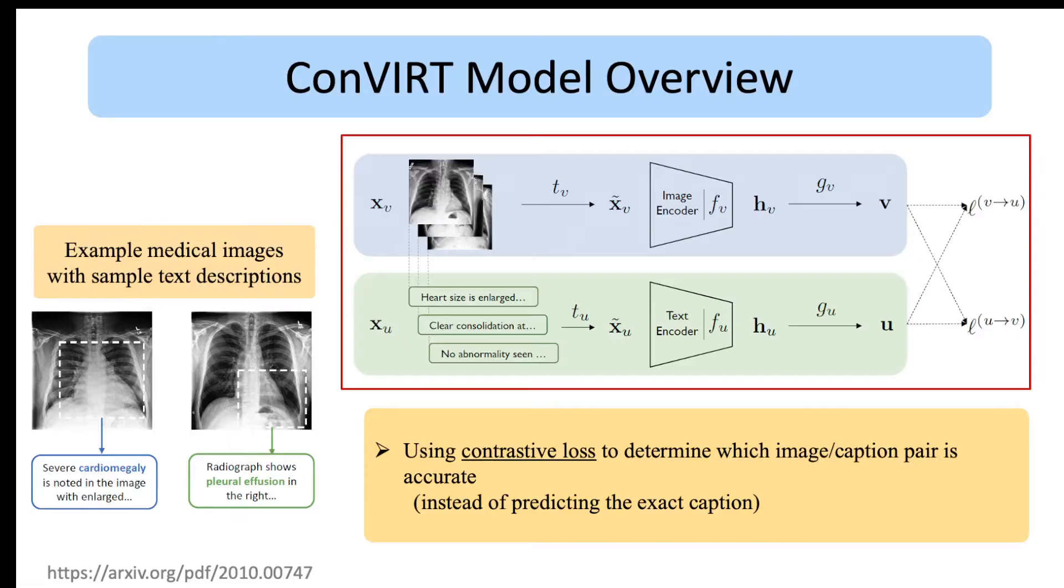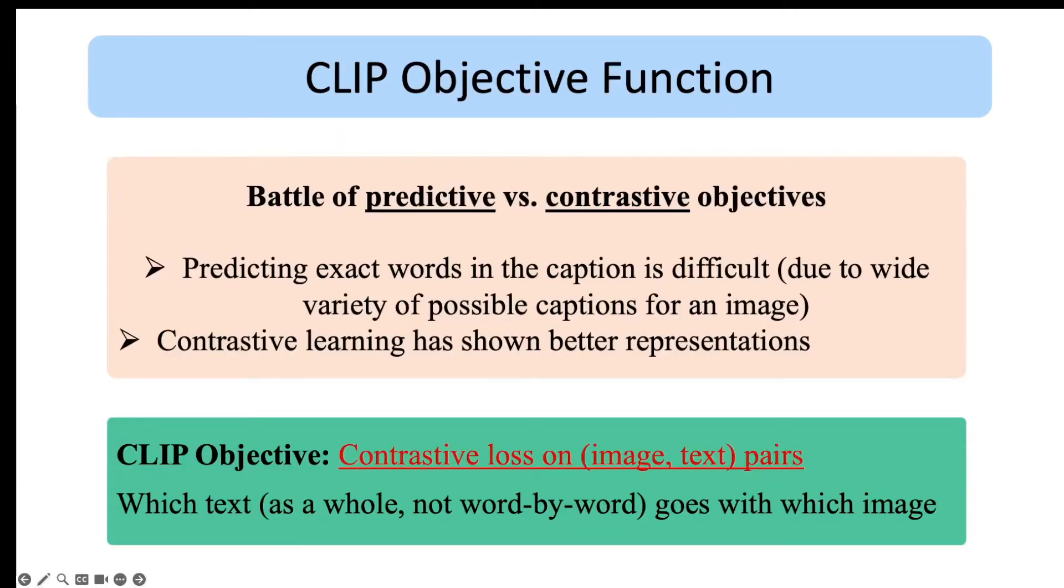In contrast to VirTex, for training this model they use contrastive loss that tries to increase the cosine similarity of representations of images and texts from the correct pairs. ConVIRT uses contrastive loss to maximize the similarity of corresponding representations. VirTex tries to predict the exact caption while ConVIRT uses contrastive loss. As we said earlier, predicting the exact caption is difficult, therefore CLIP follows the approach of ConVIRT instead.